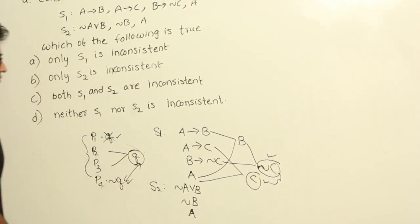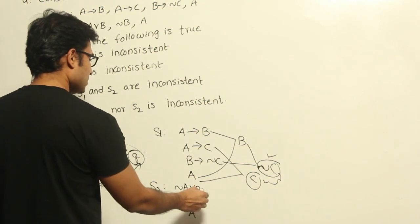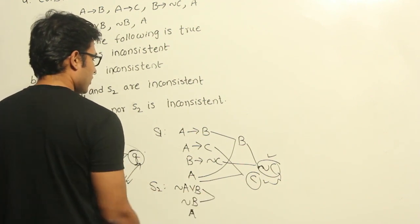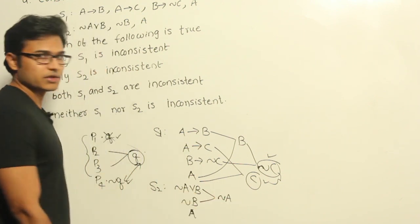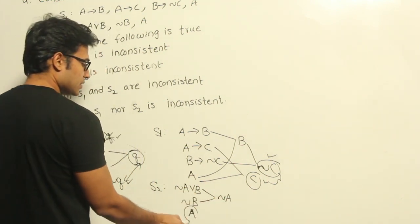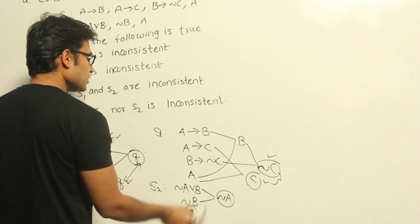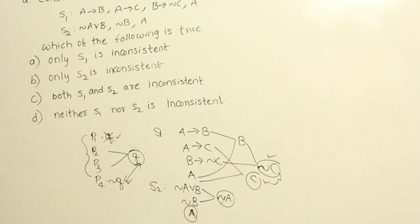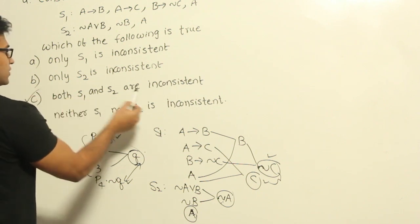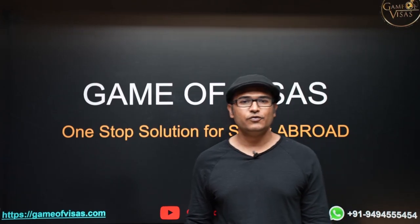Now from this, if you observe these two, from this you can clearly say that negation A is true, right? It is disjunctive syllogism. Now if you observe this, this is saying A is true and this is saying negation A is true, which cannot be possible. Only one of them can be true. Therefore again it is inconsistent. So the answer is both S1 and S2 are inconsistent.